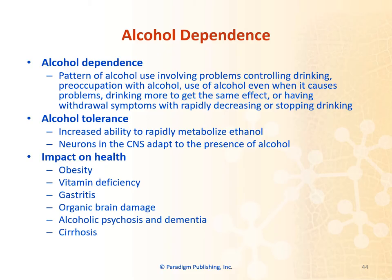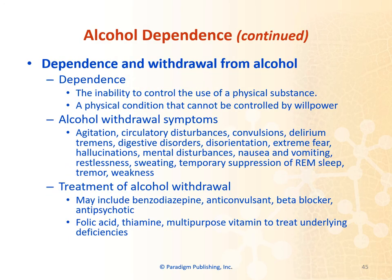Alcohol dependence is a pattern of alcohol use involving problems controlling drinking, preoccupation with alcohol, use of alcohol even when it causes problems, drinking more to get the same effect, or having withdrawal symptoms when rapidly decreasing or stopping drinking. Alcohol tolerance is the increased ability to rapidly metabolize ethanol, and neurons in the central nervous system adapt to the presence of alcohol. Health impacts of alcohol dependence include obesity, vitamin deficiency, gastritis, organic brain damage, alcohol psychosis, dementia, and cirrhosis. Withdrawal symptoms include agitation, circulatory disturbances, convulsions, delirium, tremors, digestive disorders, disorientation, extreme fear, hallucinations, mental disturbances, nausea and vomiting, restlessness, sweating, temporary suppression of REM sleep, and weakness.